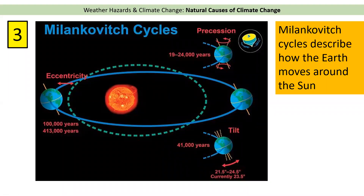The final natural cause of climate change is something called the Milankovitch cycles, which describe how the Earth moves around the sun. We know the Earth rotates once every 24 hours and goes around the sun every 365 days, but it doesn't always do so in the same way. There are three Milankovitch cycles. The first is axial tilt: the Earth is tilted on its axis, currently at 23.5 degrees, but about every 40,000 years the axis changes slightly — the Earth wobbles. When it wobbles towards the sun it gives more heat; when it wobbles away it gives less heat.